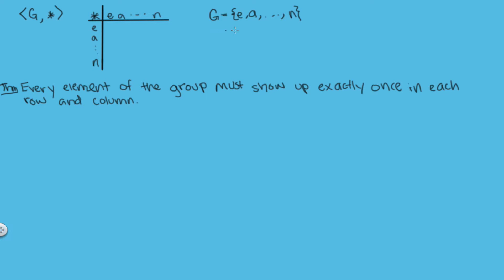So if we set up here that our group G had the elements E, A, all the way up to the nth element, that tells us that each one of these n elements has to show up in each row and each column, and also that no element can appear twice in one row or one column.